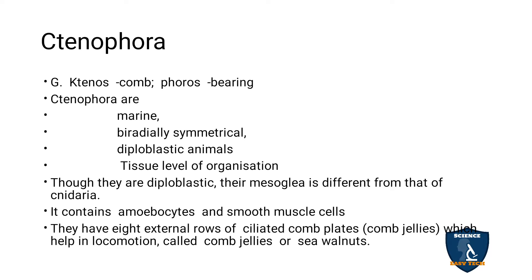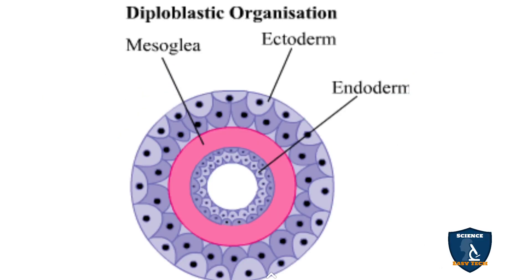They are diploblastic animals, meaning they possess only two germ layers: ectoderm and endoderm. In between the ectoderm and endoderm there is a fluid called mesoglia. This mesoglia in Ctenophora is different from that of Cnidarians, which are also diploblastic animals.